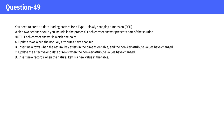Each correct answer presents part of the solution. A. Update rows when the non-key attributes have changed. B. Insert new rows when the natural key exists in the dimension table and the non-key attribute values have changed. C. Update the effective end date of rows when the non-key attribute values have changed. D. Insert new records when the natural key is a new value in the table. Please pause the video and think through the answer options and then check the answer.